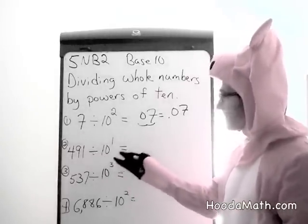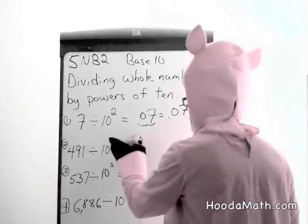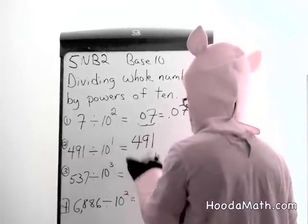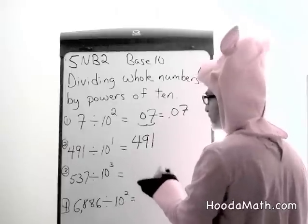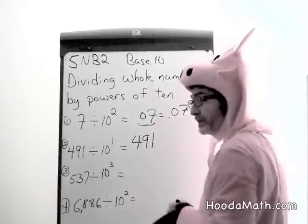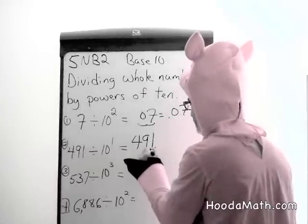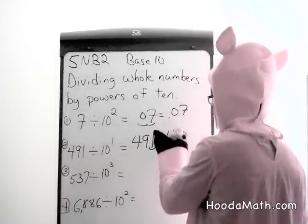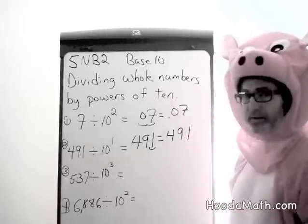491 divided by 10 to the first power: we write 491 and move the decimal to the left one place. All whole numbers have a decimal place to the right of them. Move it one place — 49 and one tenth.